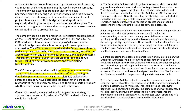Answer A continues: once the target architecture is selected, it should be analyzed using a state evaluation table to determine transition architectures, and a value realization process should be established to ensure risk concerns are addressed. However, value realization process is part of Phase H, not Phase F. Also, this option doesn't really address risk, so it cannot be the best answer.